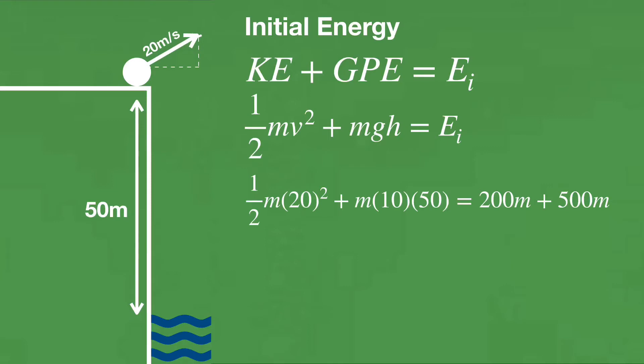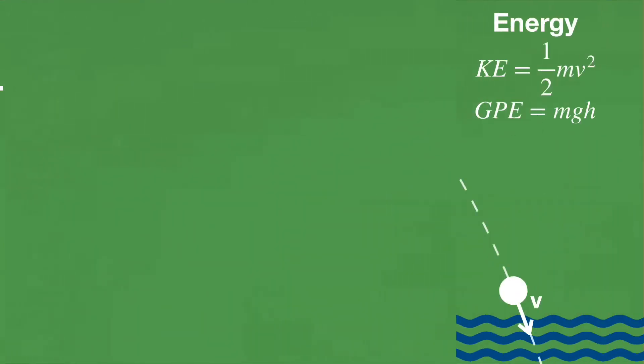Our value for initial energy using the two equations for energy that we already have is 700m. If our initial total energy of the system is 700m, then the final energy of the system must also be 700m. That's just due to the conservation of energy.